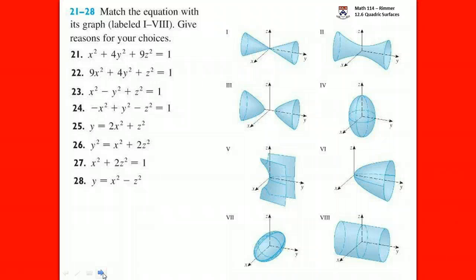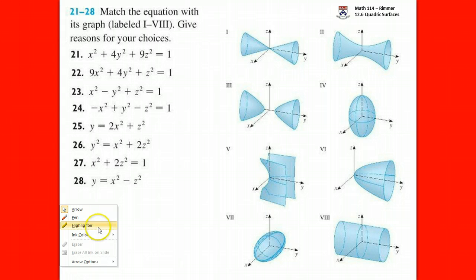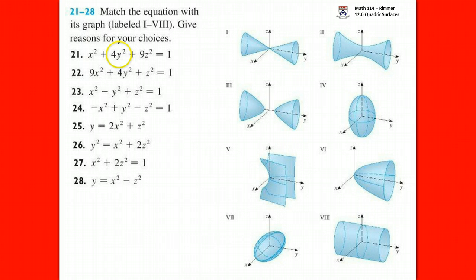It's not quite in standard form, but we can get it there. Standard form has x squared over a squared, y squared over b squared, and z squared over c squared, all set equal to 1. Since it's already equal to 1, instead of multiplying by 4 we divide — so the equation becomes x squared over 1, y squared over one-fourth, and z squared over one-ninth equals 1. The major axis is in x, with the largest denominator being 1. That's why it's Roman numeral VII.